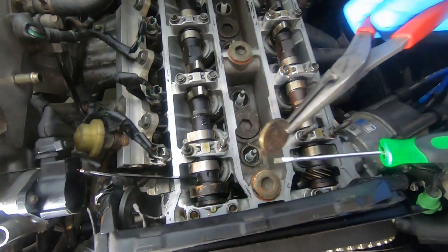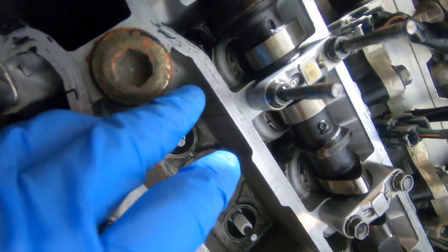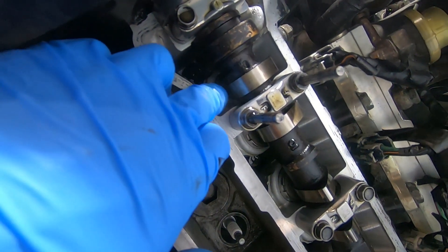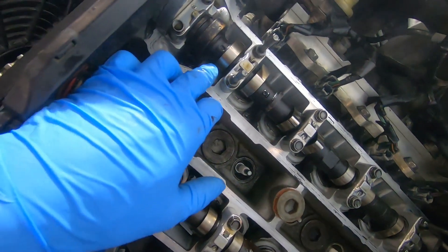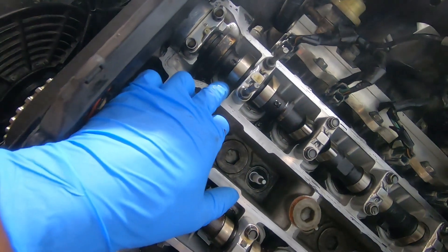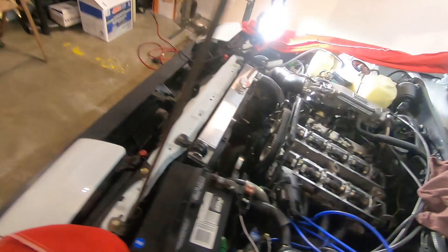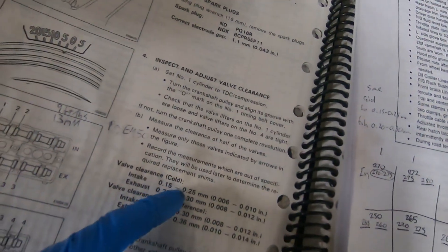All right, so there we go. I put my 275 shim in there. When I got the shim in, I'll usually turn the bucket, make sure everything moves freely still. It's a good idea, even with some light lube like WD-40, to lube up the shims before you put them in there.